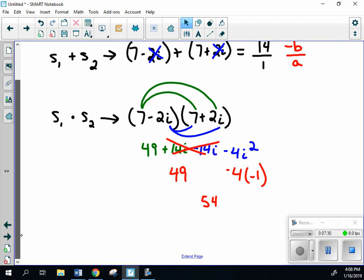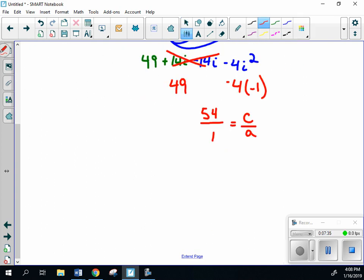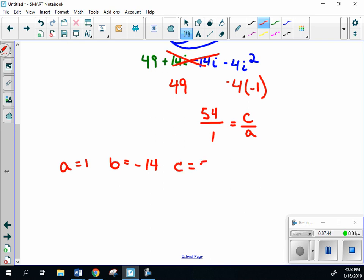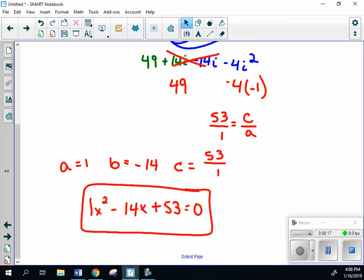So 53/1, which is c/a. Therefore a = 1, b = -14 (opposite of what we see), c = 53. Our equation: x² - 14x + 53 = 0. That's how you use it with imaginary numbers. It doesn't add much difficulty—just ensure your distribution is correct for the product. Sum and product of roots gives us a quicker way to find the standard equation.